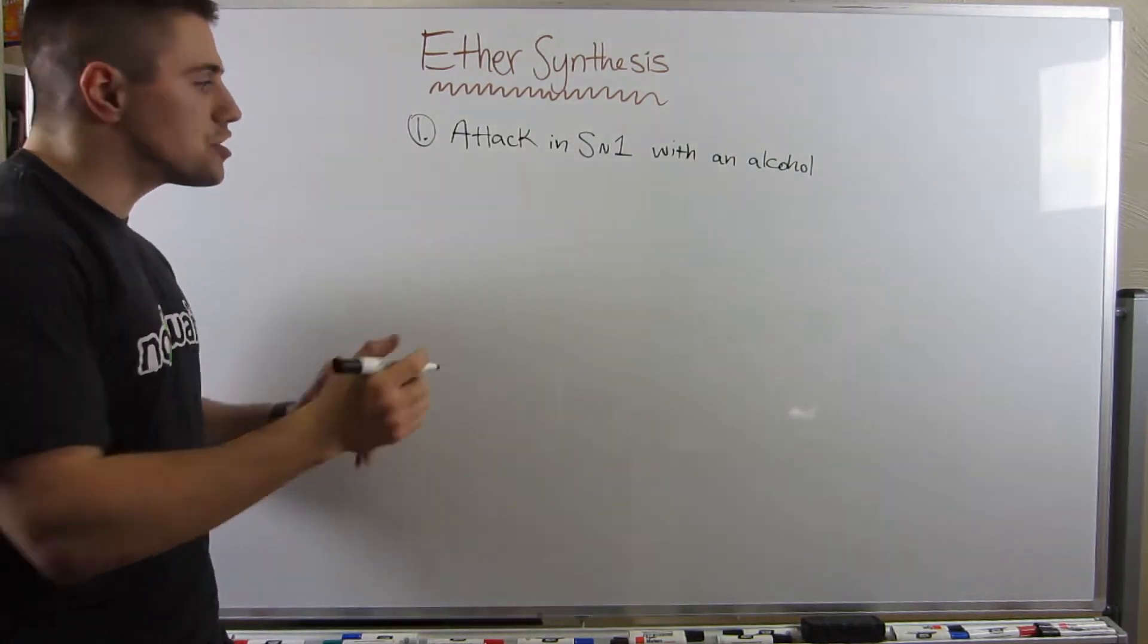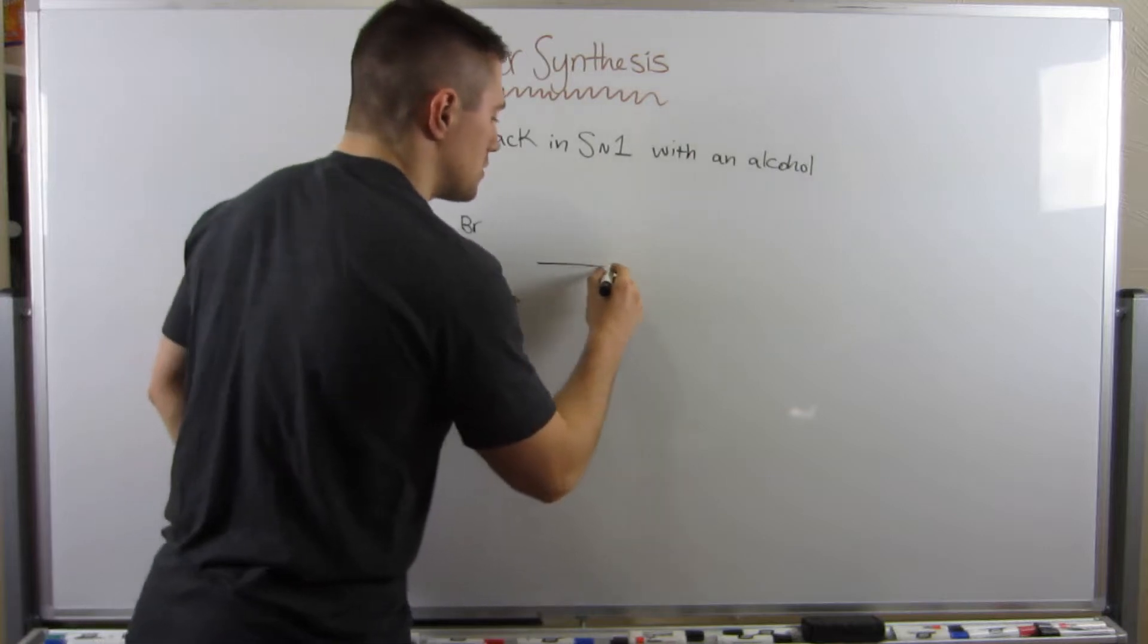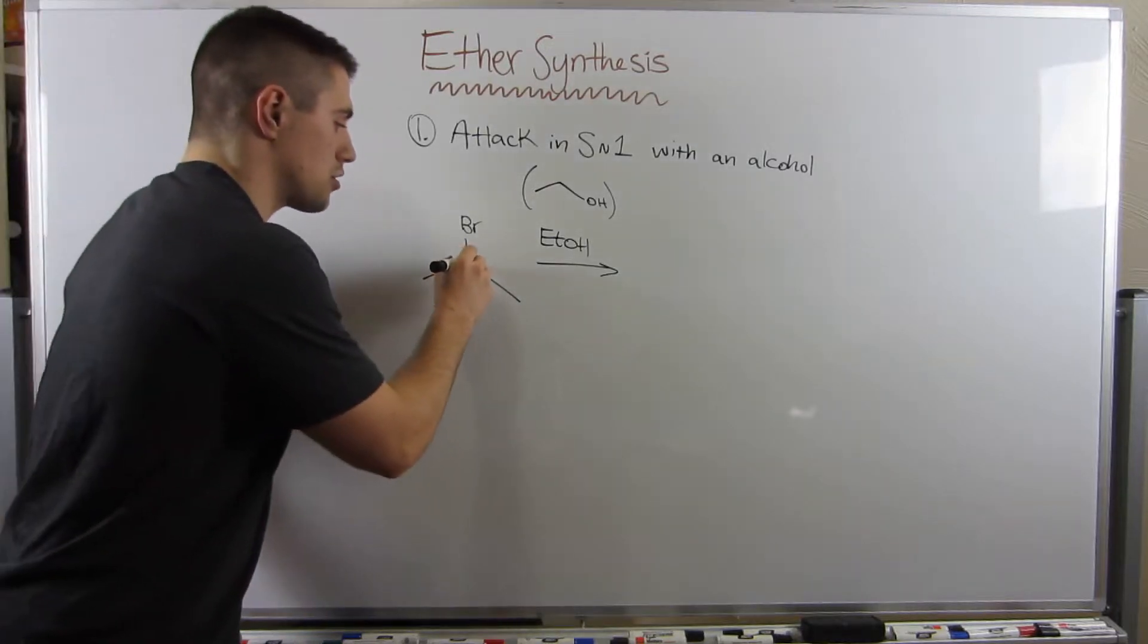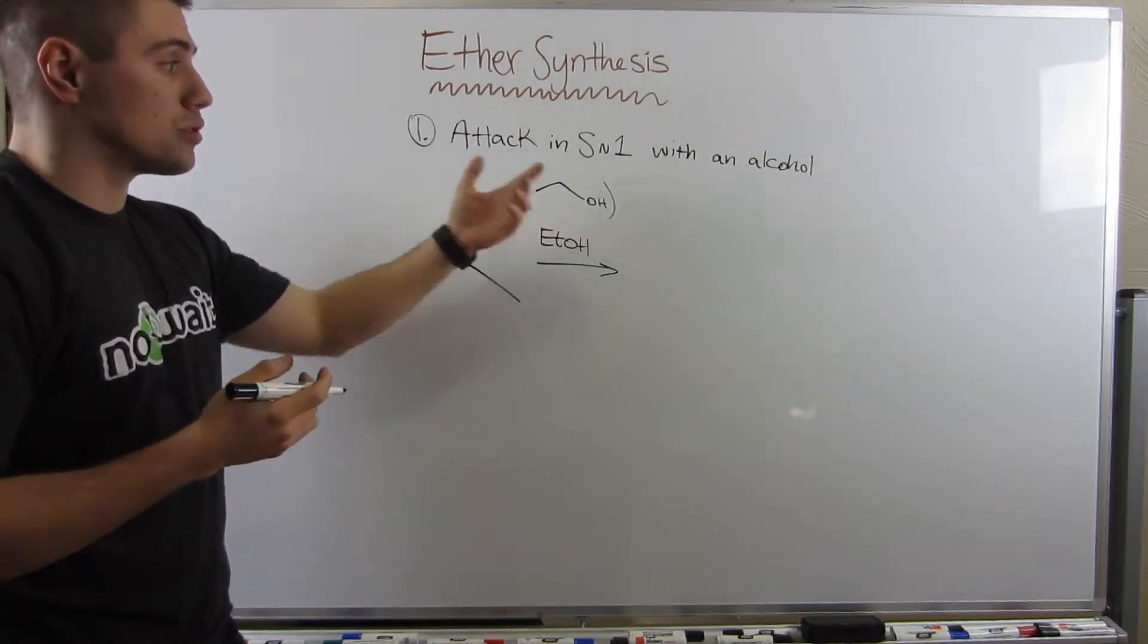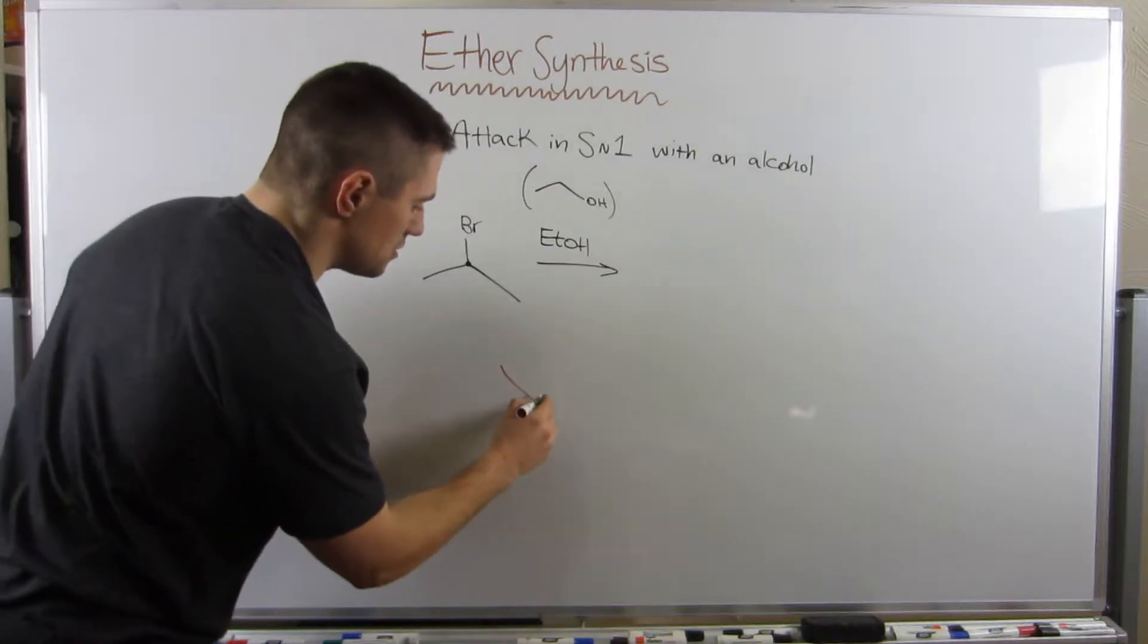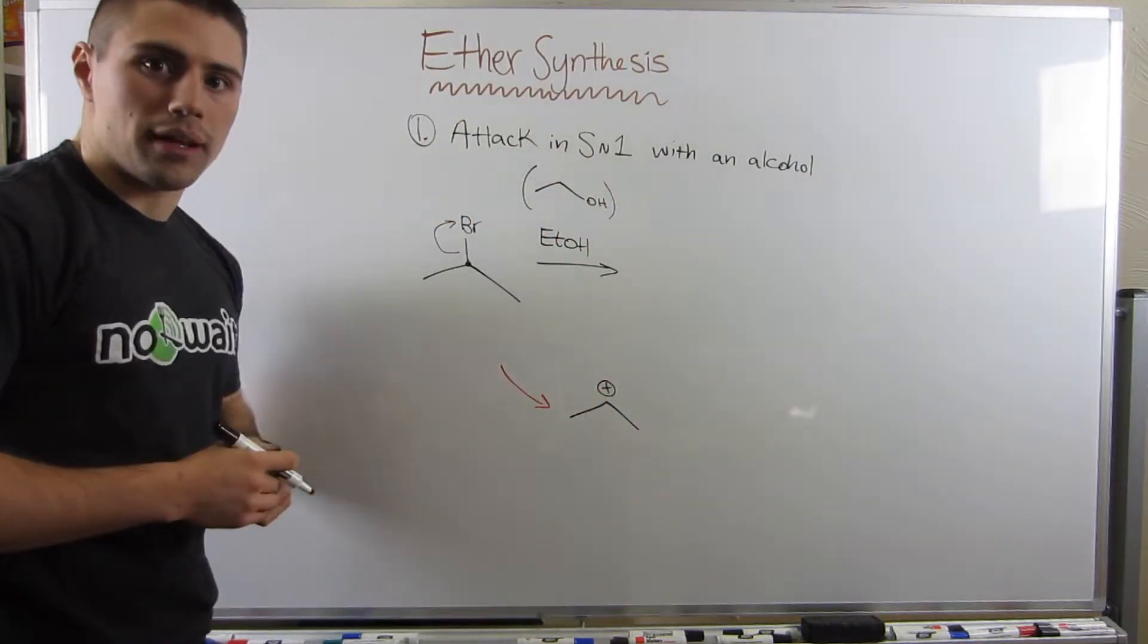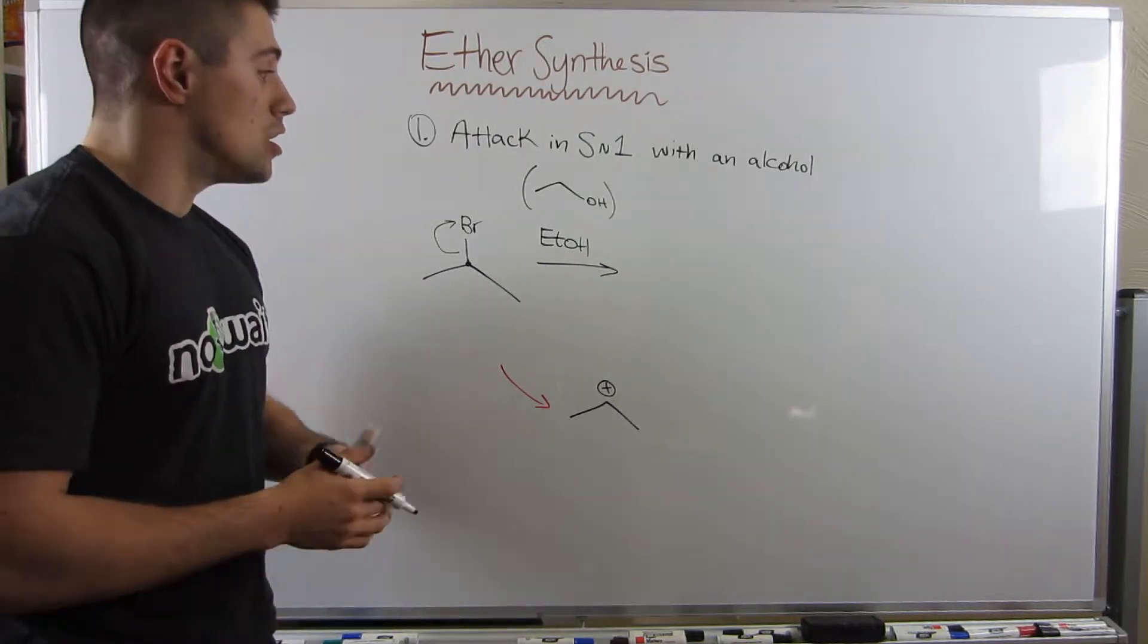In my mind there's kind of three-ish ways to do this. The first way is to attack in SN1 with an alcohol. Let's just say we had isopropyl bromide and let's say we threw in some ethanol. Remember, let's look at our substrate. He's a secondary carbon and he's attached to a good leaving group, bromine. So we have a polar protic solvent, pretty good conditions for SN1. You can bet I can have this bromine leave through solvolysis. And if I were to draw my carbocation intermediate, it would be that secondary carbon right there. Remember, look for shifts, but it doesn't really look like we have any appealing shifts, either hydride or methyl here.